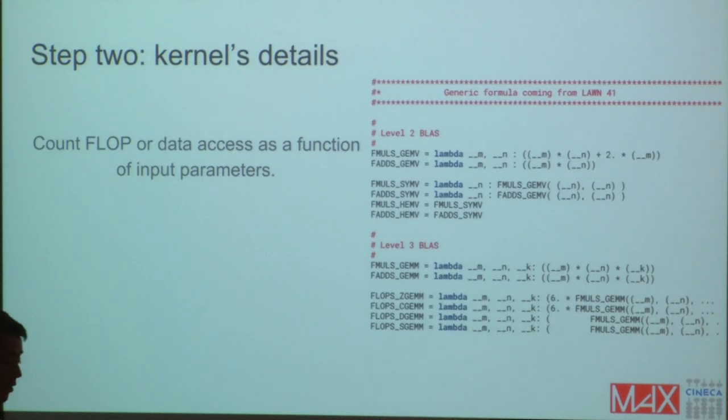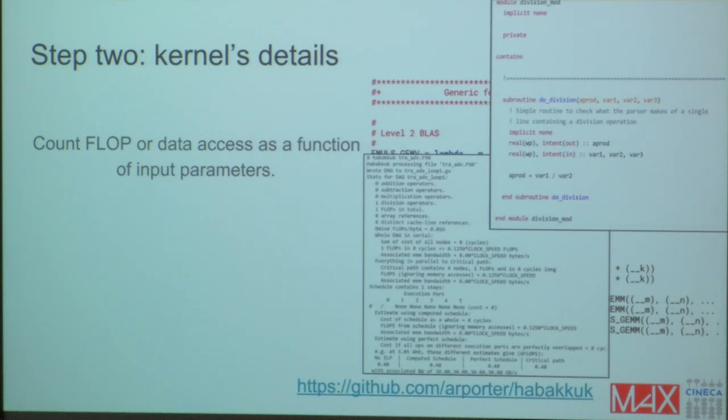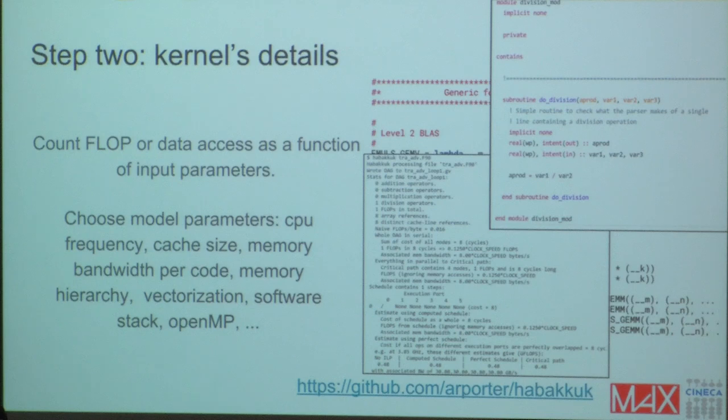Step two is counting the operations. To do this, I went through the code and just collected the number of flops that are done as a function of the input parameters. I want just very briefly report that, of course, you may use hardware counters to do this, but there are also projects going towards the analysis of the source code and providing an estimate of the floating point operations from the source code. This could be an option to keep in mind maybe in the future. But the second part is how to describe the machine, the hardware parameters.